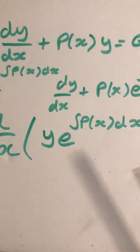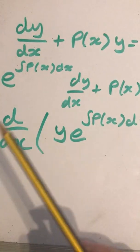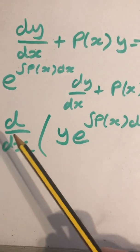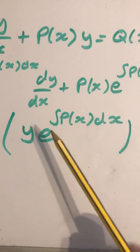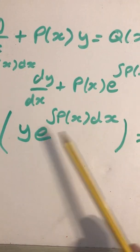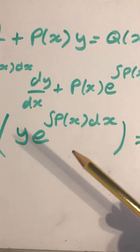To understand why the integrating factor works, we start with this expression at the bottom: the derivative with respect to x of y times e to the integral of p(x) dx. Bear in mind this function of e is the integrating factor.